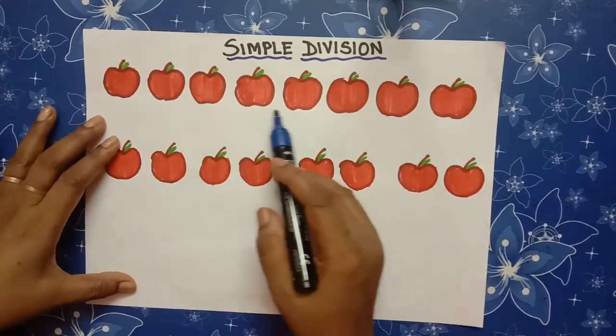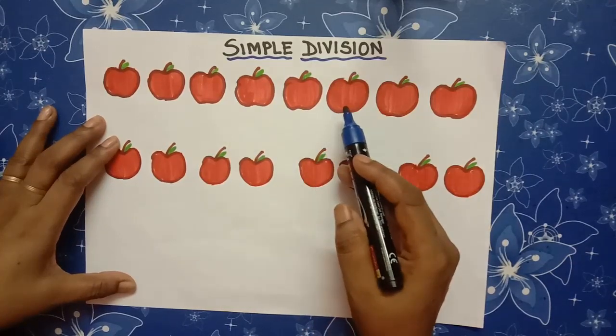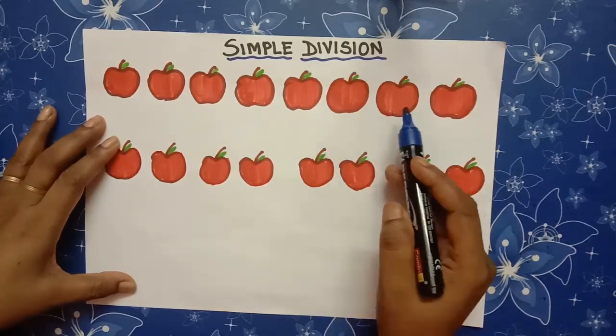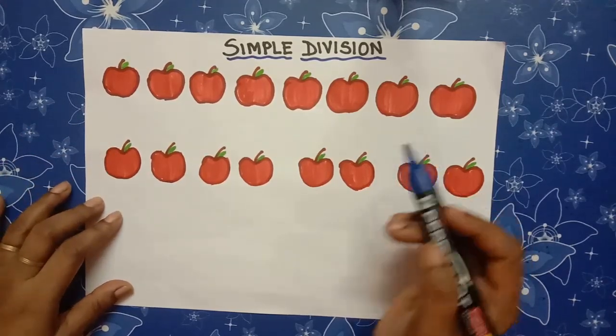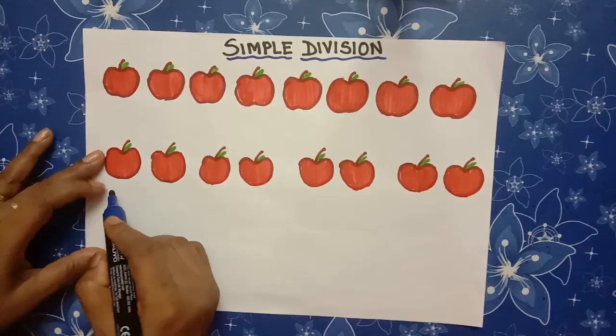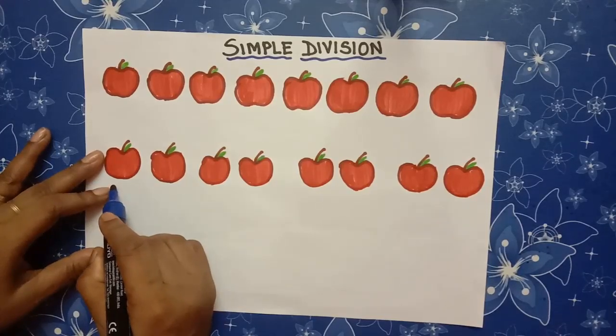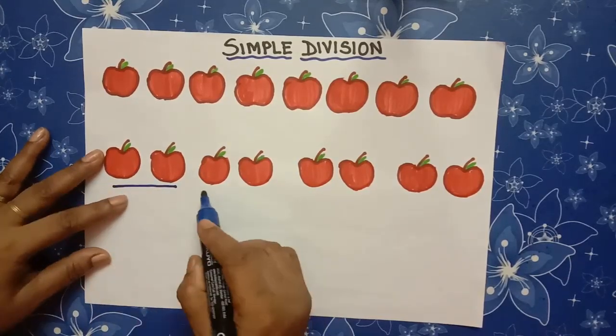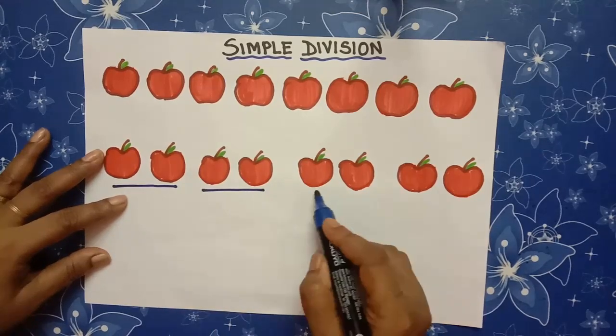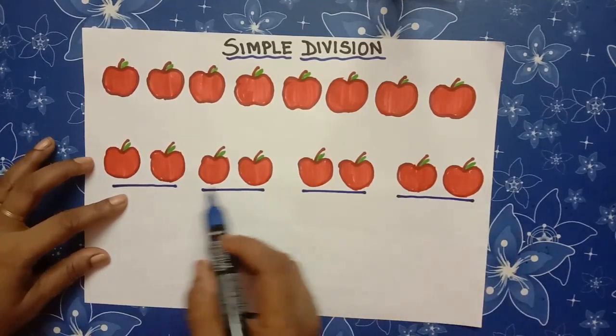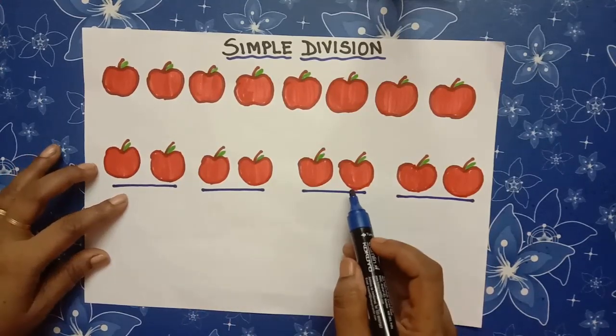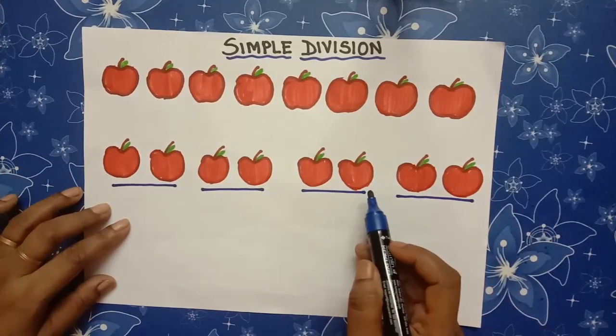Now, these 8 apples you have to share equally among 4 children. Let us divide the apples into pairs. 1, 2, 3, 4. So, now 8 apples are divided into pairs.